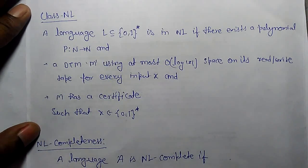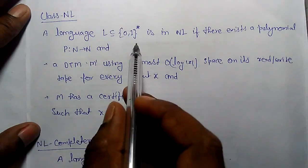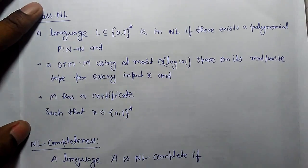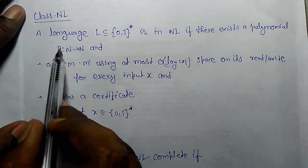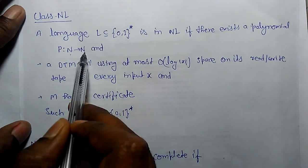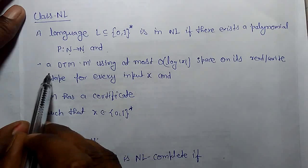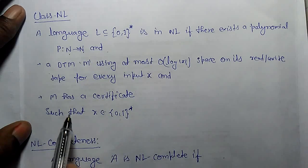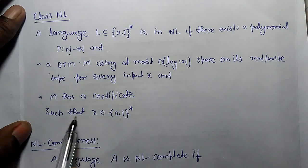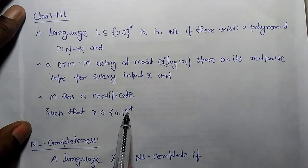Now let's understand class NL. A language L that belongs to {0,1}* is in NL if there exists a polynomial p such that for deterministic Turing machine M using at most log(|x|) space on its read/write tape for every input x, M has a certificate such that x belongs to {0,1}*.